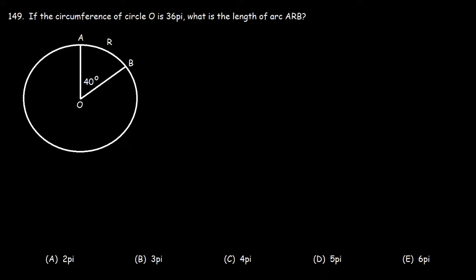Number 149. If the circumference of circle O is 36 pi, what is the length of arc ARB? Go ahead and try that problem.